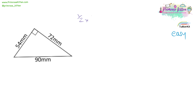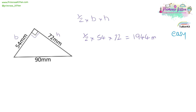Again, half times base times height. The base and height are the ones that are around the right angle, and it doesn't really matter which way around you label them. So here it is going to be half times 54 times 72, which equals 1,944 millimetres squared.